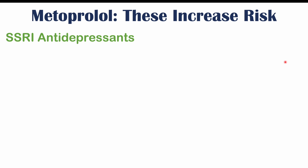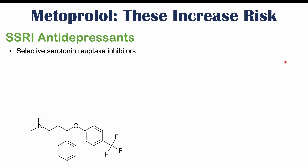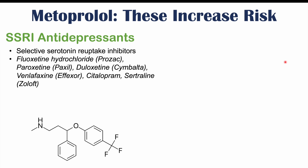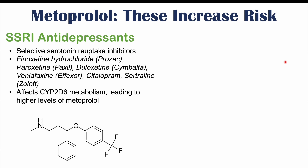SSRI antidepressants — selective serotonin reuptake inhibitors — can also interact with metoprolol. These include fluoxetine (Prozac), paroxetine (Paxil), duloxetine (Cymbalta), venlafaxine (Effexor), citalopram, and sertraline (Zoloft). SSRIs affect CYP2D6 metabolism, which can result in stronger effects of metoprolol — higher metoprolol levels leading to lower blood pressure and lower heart rate, among other side effects.